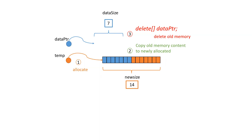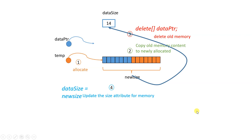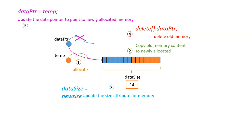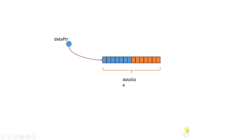This pointer is now pointing to garbage. So the very first thing we do is make sure we have an updated size — we copy the size and make it 14 because it's not seven anymore. We don't need to do that with our string because we null-terminated. Then, after doing this, we make the data pointer point to where the temporary pointer is pointing. By saying data pointer equals temp, data pointer will point to the new location. Temp was created inside the function, so you don't need to worry about that. When the function is over, temp is going to be gone, and all that remains is the data pointer with the new size. Now you can add stuff to it.